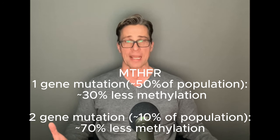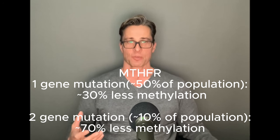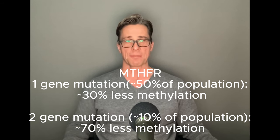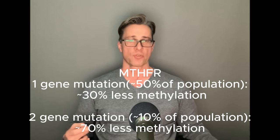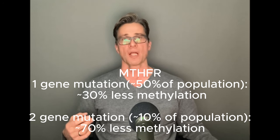50% of the population has one damaged copy of the MTHFR gene — these percentages vary from source to source — and this will result in a 30% decrease of methylation. Roughly 10% of the population has two damaged copies of the MTHFR gene. Genes always come in two copies, one from the mom and one from the dad. If both are damaged — the homozygous state — then you will have a 70% decrease of methylation.